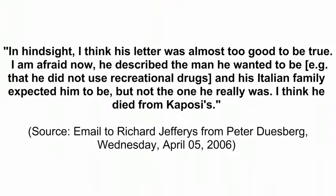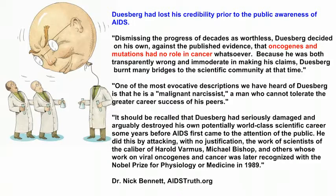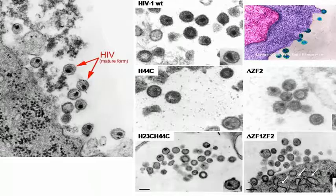What was Duisberg's response? Did he retract his statement? No, he used an ad hoc argument. Here's a quote from a published email he wrote to a colleague: 'In hindsight, I think his letter was almost too good to be true. I am afraid now he described the man he wanted to be — that he did not use recreational drugs, and his Italian family expected him to be — but not the one he really was. I think he died from Kaposi's.' This is such an obvious reversal of position we begin to see how deeply the confirmation bias affects Peter Duisberg's views. This was a missed opportunity to falsify his position that only people who took drugs or antivirals developed AIDS. Instead, he discounted this evidence with an ad hoc hypothesis, ensuring that he never conceded his failure. He has done the same for those who were infected by transfusion, hemophiliacs, newborns, healthcare workers, and married heterosexual transmission. These types of rationalizations show that he no longer understands the basic practice of science.